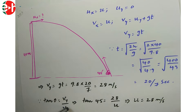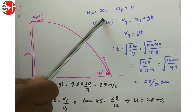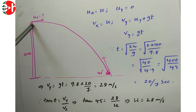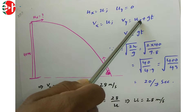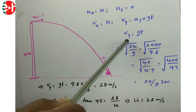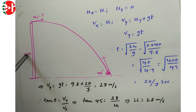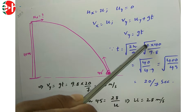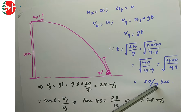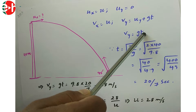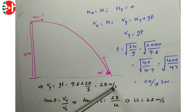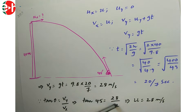To find Vy, use Vy = Uy + g·t with Uy = 0. The time is t = √(2H/g) = √(2×40/9.8) = 20/7 seconds. So Vy = 9.8 × (20/7) = 28 m/s. Then tan 45 = 28/U, giving U = 28 meters per second.